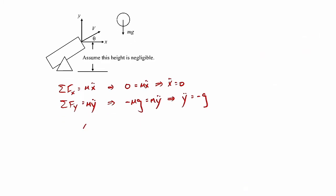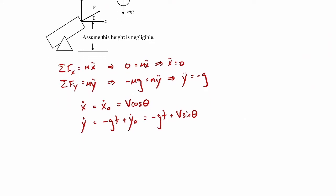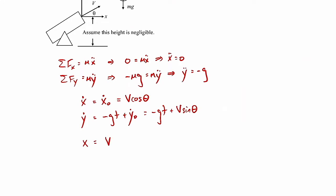Integrating each equation once gives velocity. The x velocity is simply the initial x velocity: ẋ = v cosθ. The y velocity is ẏ = −gt + v sinθ. Integrating once more gives position: x = v cosθ × t, and y = −½g t² + v sinθ × t, with both initial positions equal to zero.